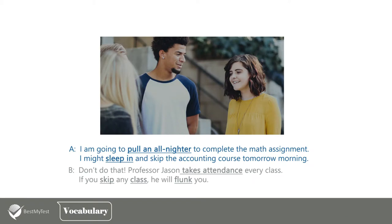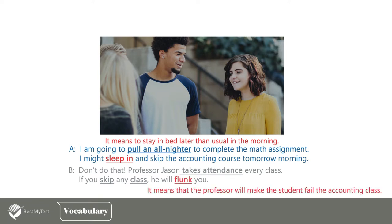'I am going to pull an all-nighter to complete that math assignment. I might sleep in and skip that accounting course tomorrow morning.' 'Don't do that! Professor Jason takes attendance every class. If you skip any class, he will flunk you.' Here, 'to sleep in' means to stay in bed later than usual in the morning, and 'to flunk' means that the professor will make the student fail the accounting class.